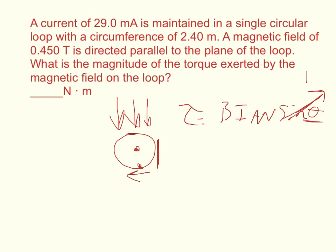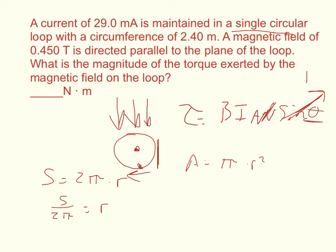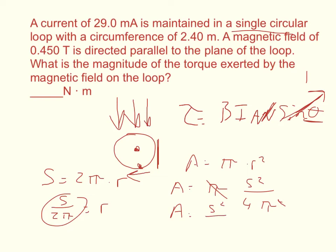We have everything we need to calculate the torque. The number of turns N is 1, since it's a single circular loop. The other thing we need is the area, and what we're given is the circumference — the arc length. The arc length equals 2π times the radius, so the radius equals arc length over 2π. The area equals π times r squared, so substituting, area equals π times s squared over 4π squared. One of the pi's cancels, giving us area equals arc length squared over 4π. Make sure you convert your current into amps rather than milliamps — multiply by 10 to the negative third.